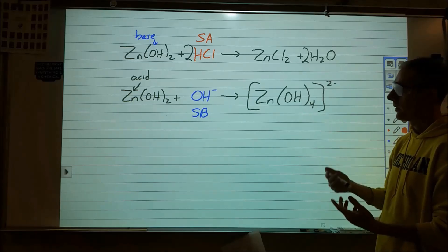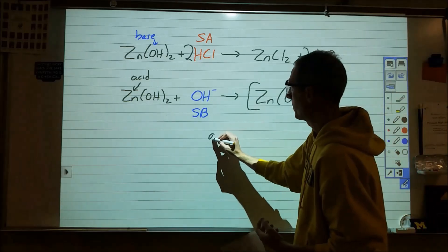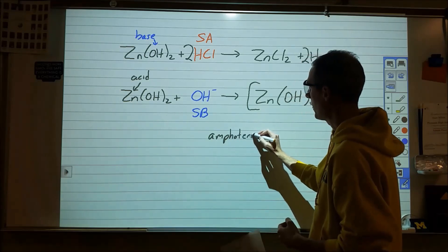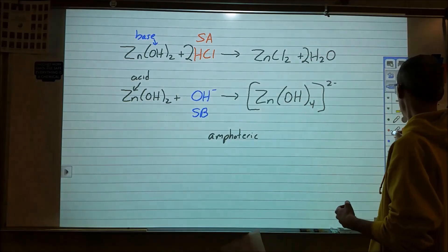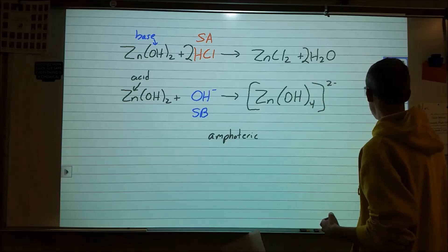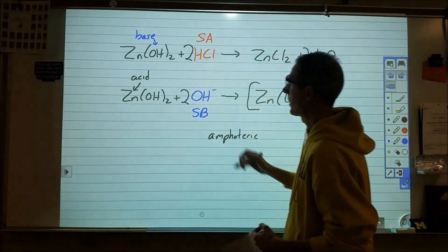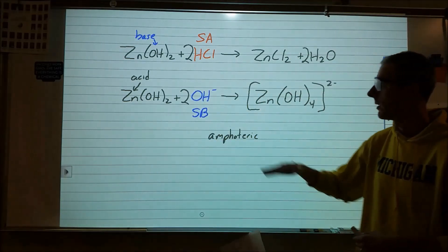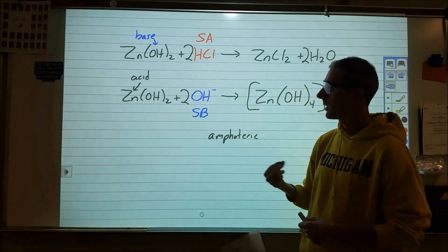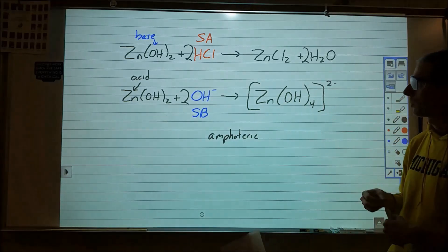And therefore, we have an amphoteric substance, something that can act as both an acid and a base. And this one, of course, to fully balance this would require 2 hydroxides to react with it. And you'll note that we added a large excess of hydroxide in order to get that to form and to form quickly.